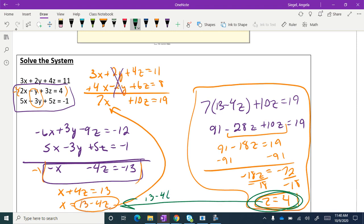Once we find z, I'm just going to look for a place that has two variables. So I might just go over there. So 13 minus 4 times 4. 13 minus 16 is negative 3. So x equals negative 3. So I have negative 3, I don't know what y is, and z equals 4.